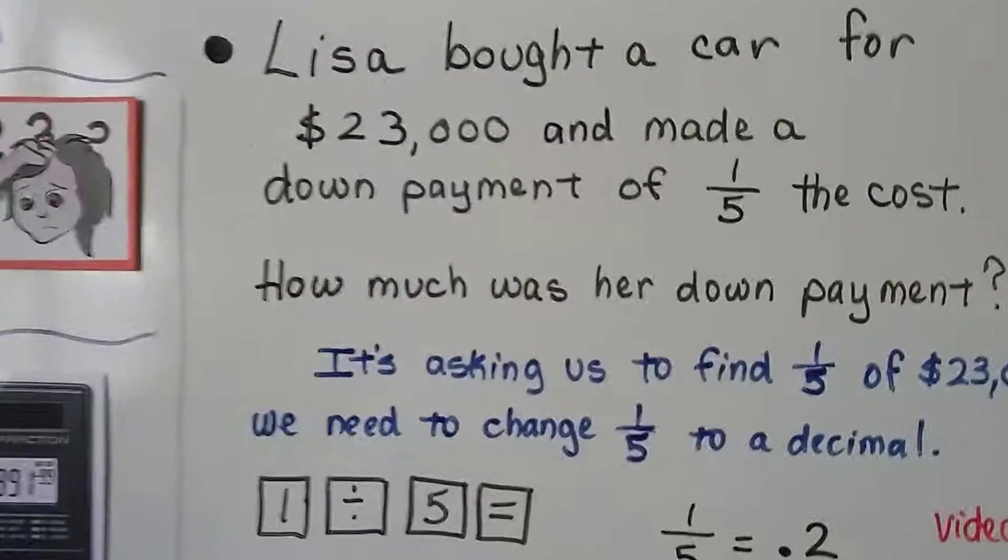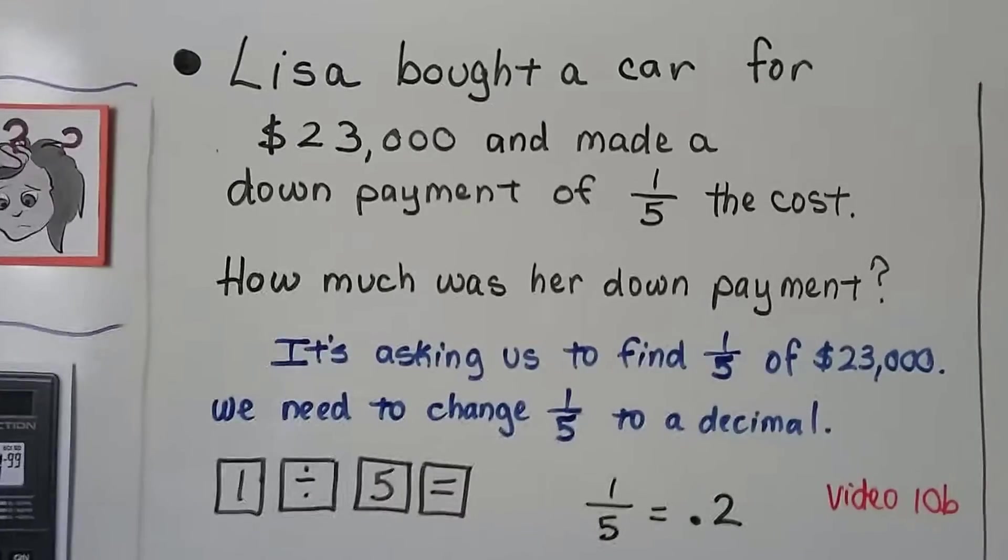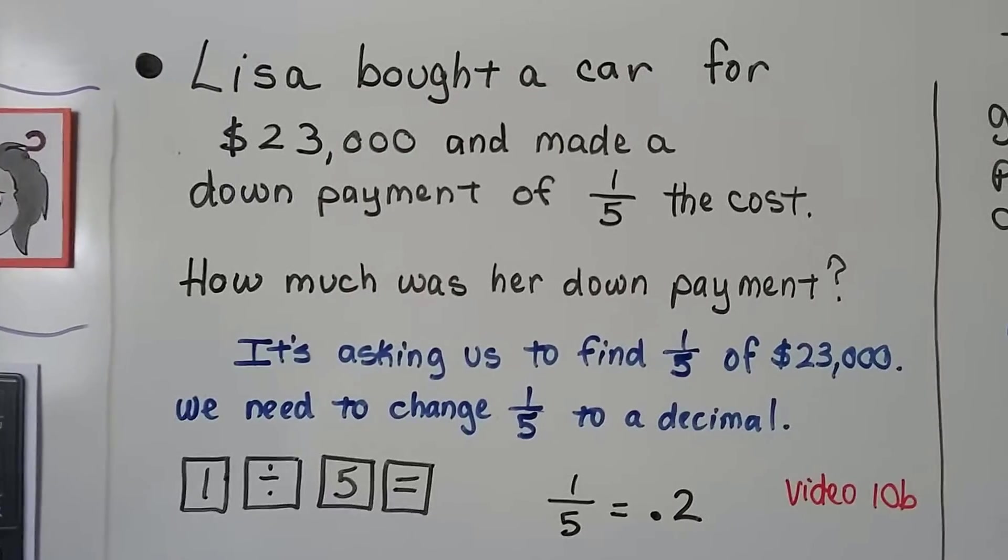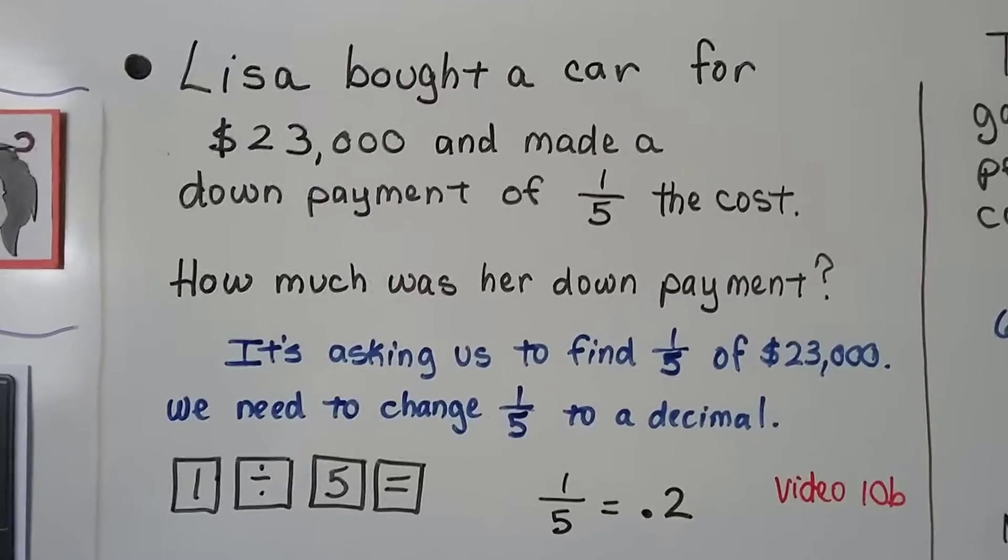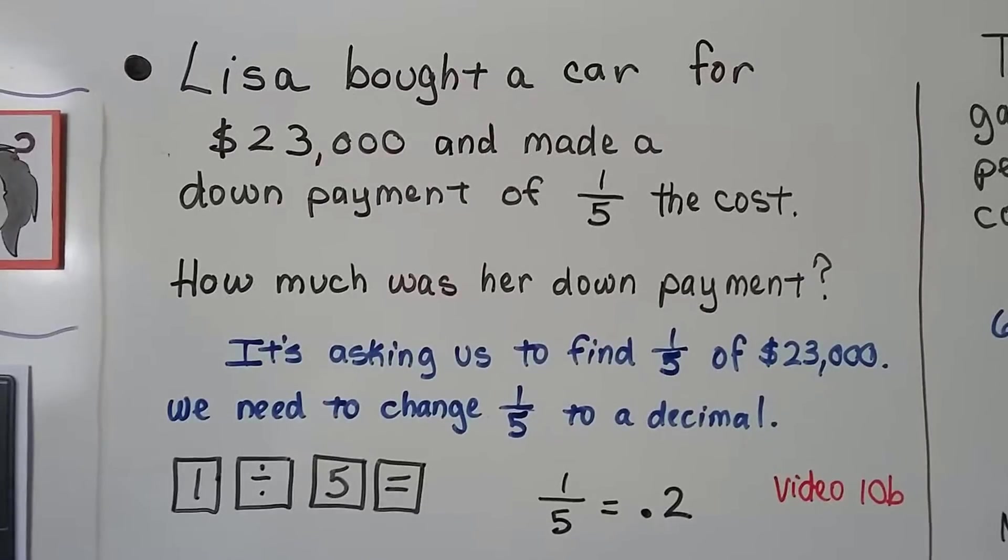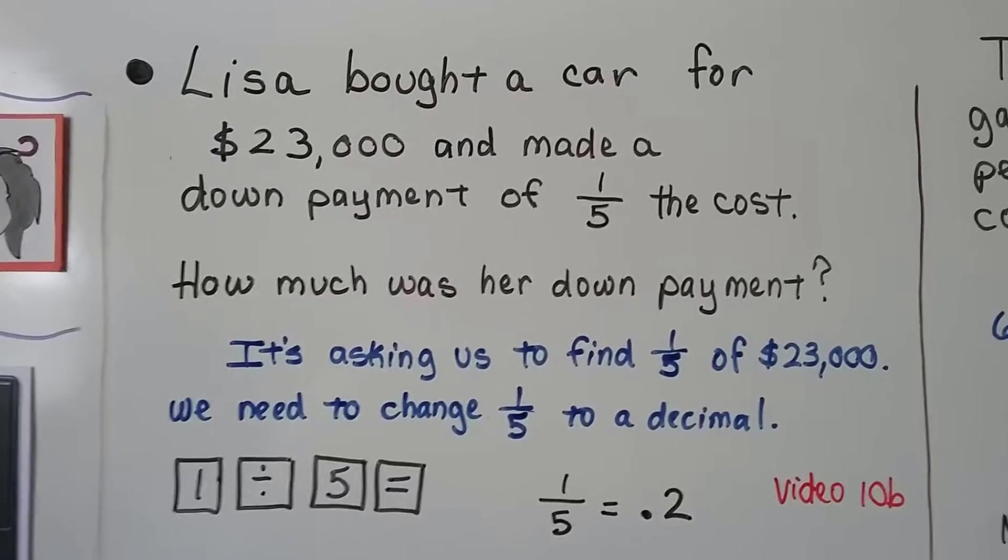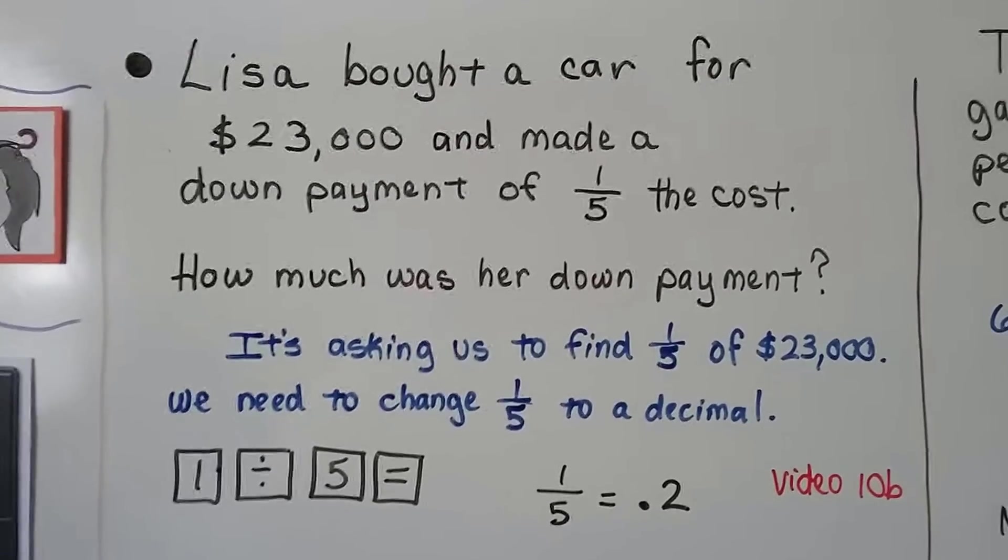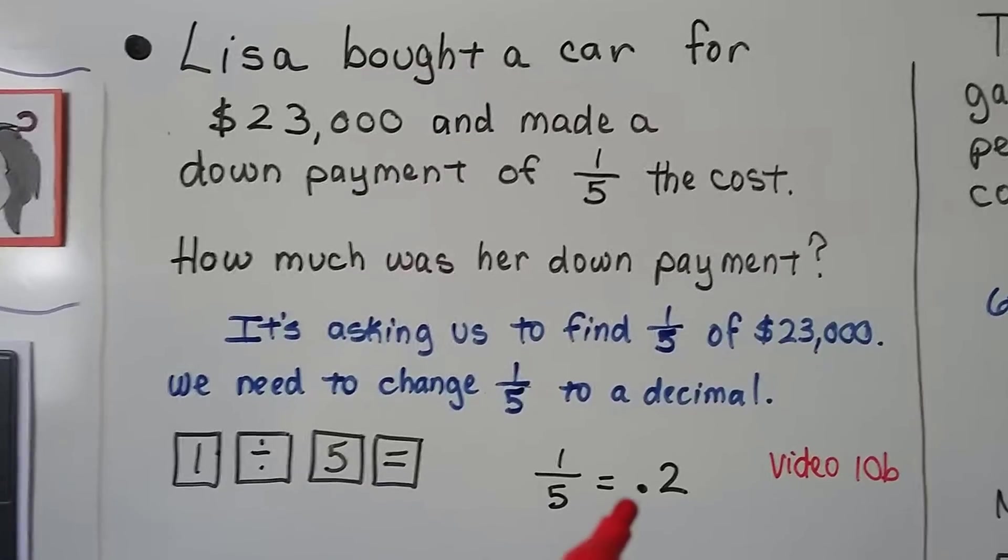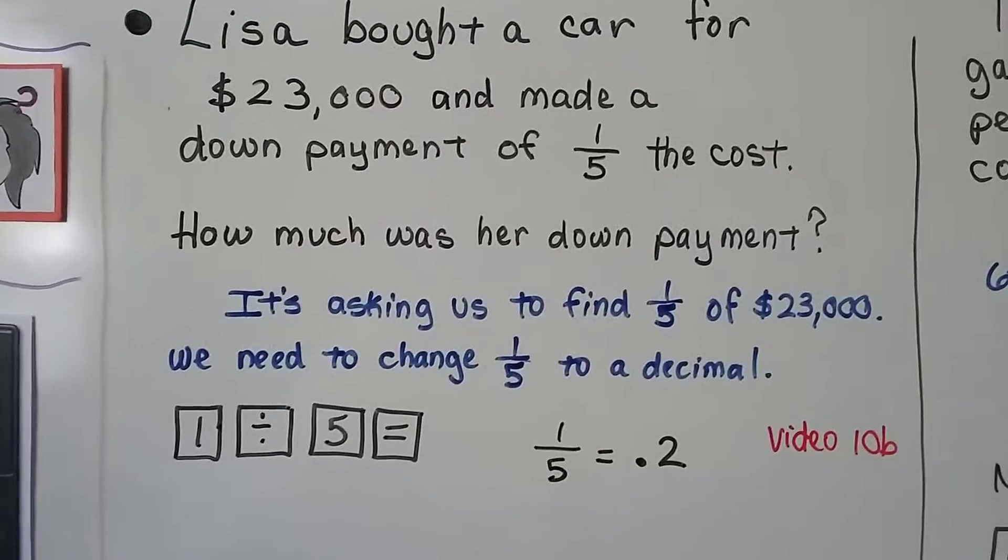Here's our first example. Lisa bought a car for $23,000 and made a down payment of 1 fifth the cost. How much was her down payment? So, it's asking us to find 1 fifth of 23,000. We need to change the 1 fifth to a decimal. We do 1 divided by 5 and it equals 2 tenths, 0.2.